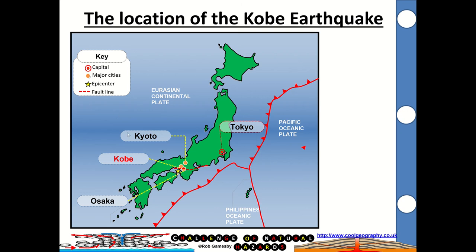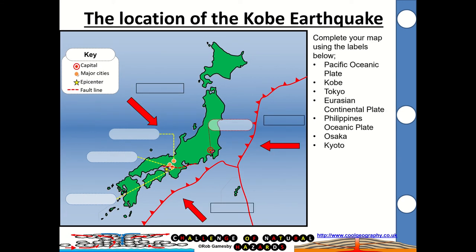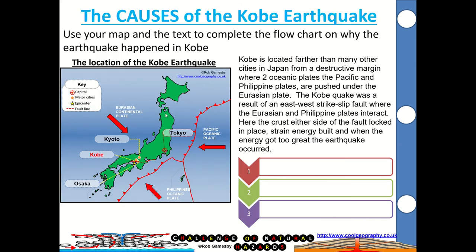You can see the location of Kobe down on the southeast coastline. You've got Kyoto a little bit further north, Osaka just to the southeast, and Tokyo is quite a way away. You can see the destructive subduction zone here, where the Philippines plate and the Pacific Ocean plate are pushing underneath the Eurasian continental plate. One of your tasks is going to be to complete the maps using the labels in the boxes.